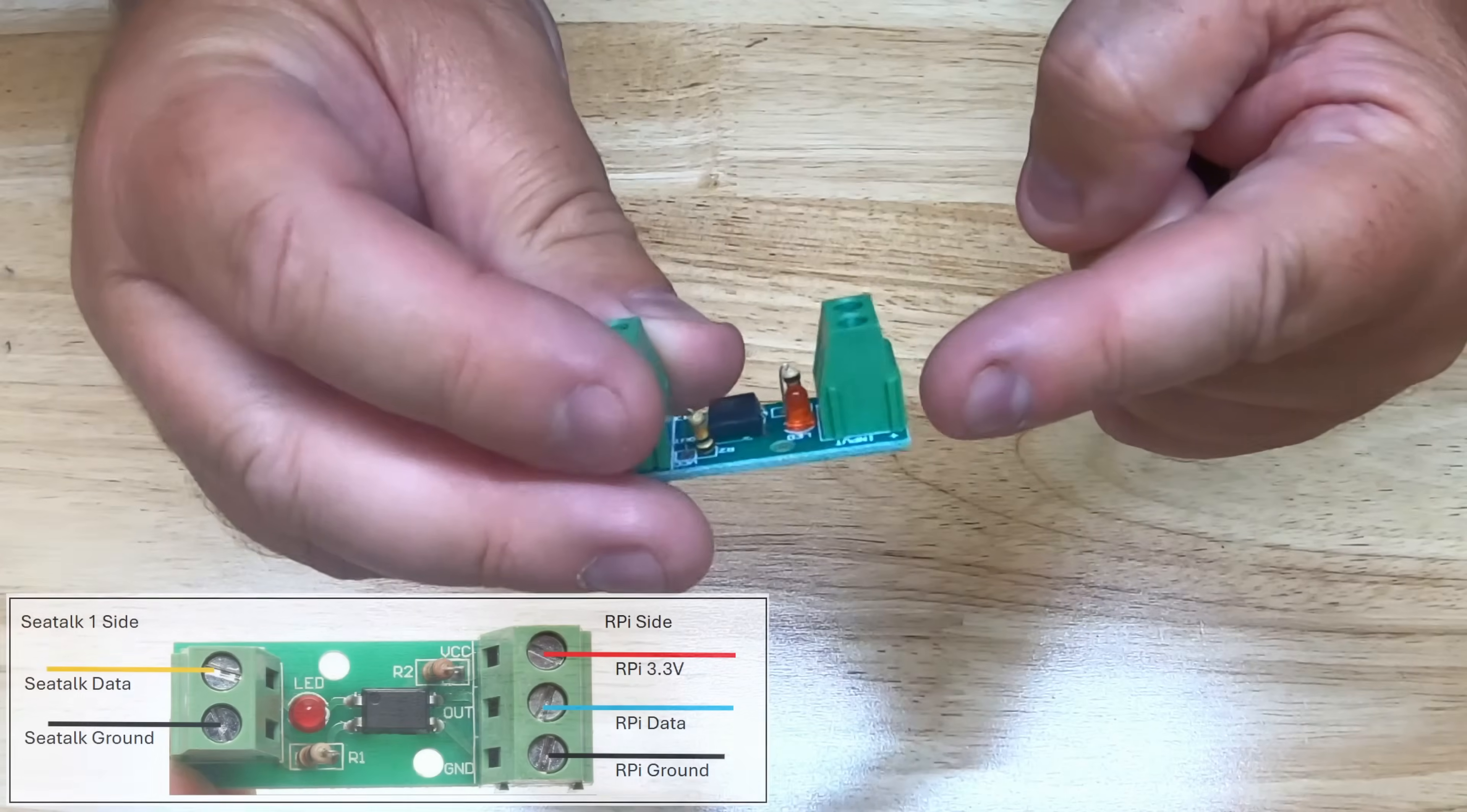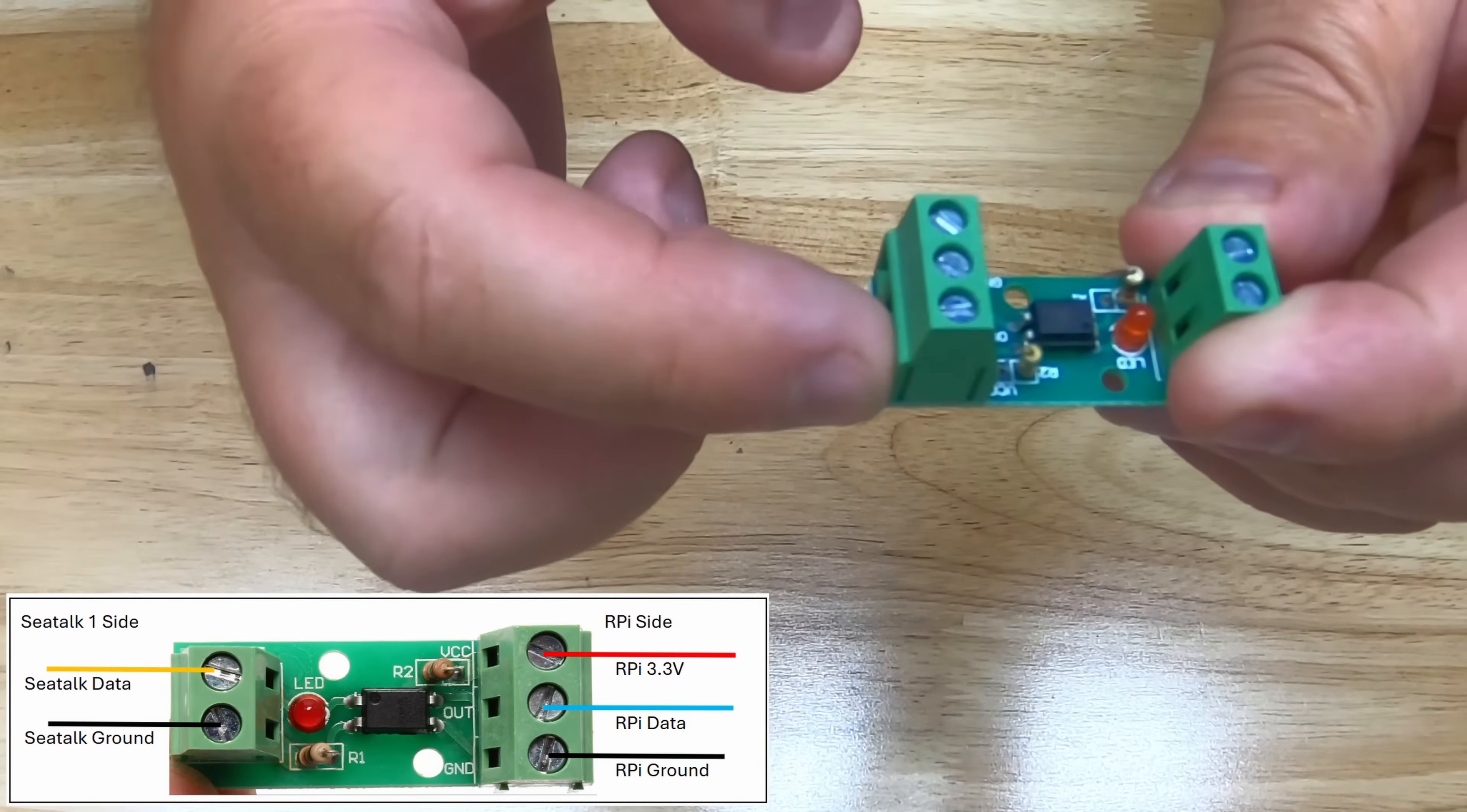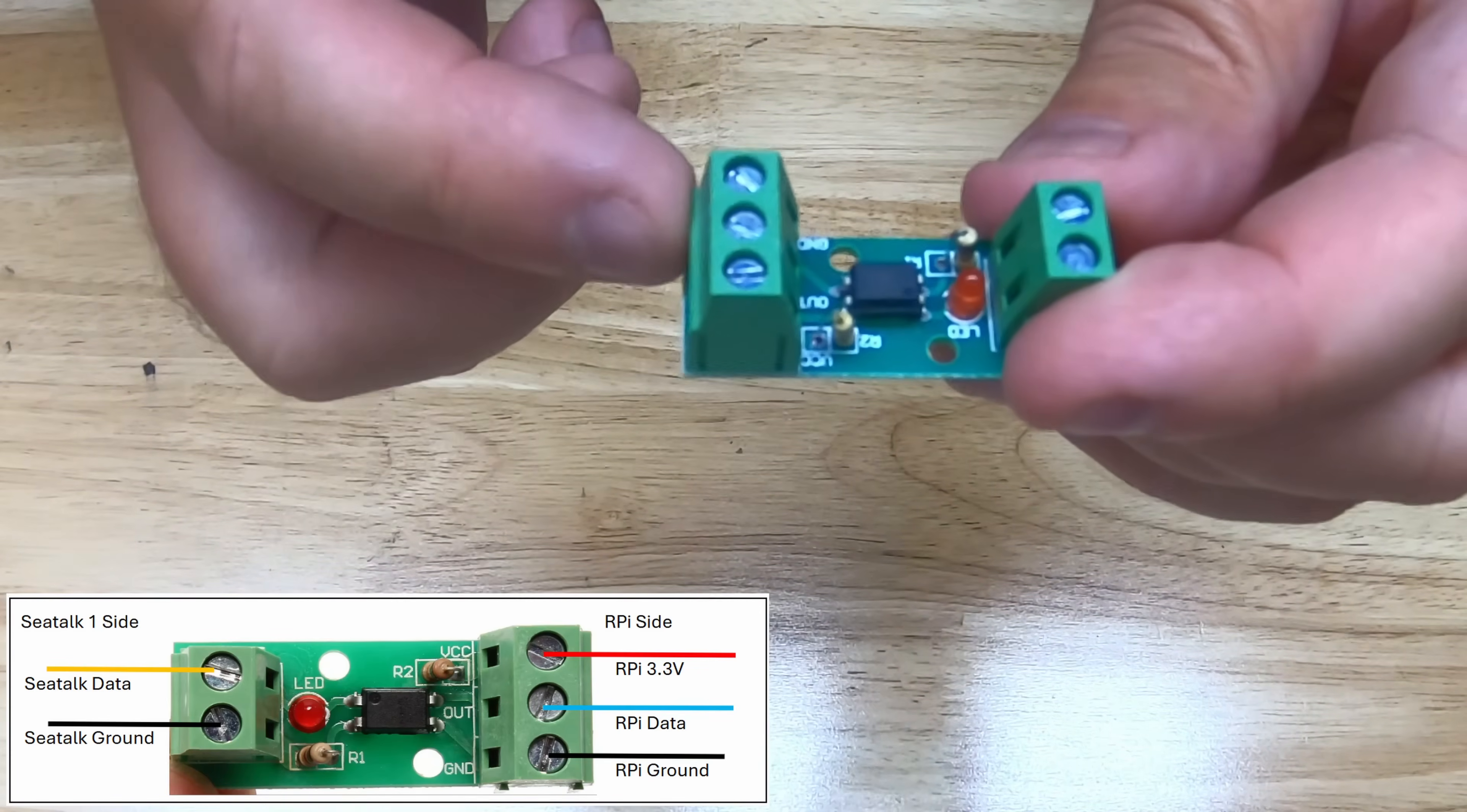So I'll go through that again. This side you've got the yellow wire from SeaTalk, so the data wire from SeaTalk and ground. And on this side you have 3.3 volts from one of the GPIO pins on the Raspberry Pi, output here to one of the data pins, the selected GPIO pin for data, and then ground to a GPIO pin here.